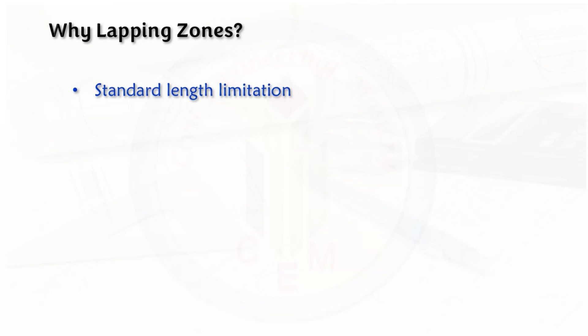The first one is standard length limitation. In India, we have the length of bars up to 12 meters, which is around 40 feet. So if this is the standard length and we have the beam length more than this, then we have to overlap the two bars for the continuity of the reinforcement.